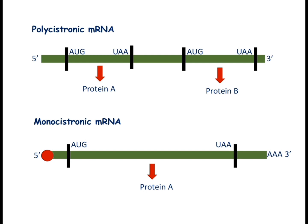In polycistronic mRNA, the space between coding sequences is called the intercystronic region. The coding sequences are called cistrons, and the space between them is the intercystronic region. This covers the two types of mRNA found in prokaryotic and eukaryotic cells. In the next video we will discuss the tRNA — its structure and function. Thank you for watching; please mention any doubts in the comment section, subscribe to our channel, and like the video if you found it helpful.